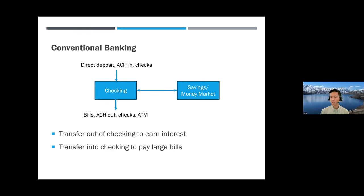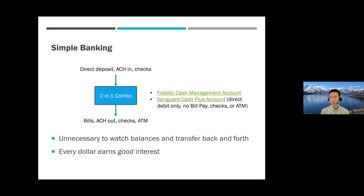After credit cards, our checking account is probably used the most. In conventional banking you have a checking account and a savings account. You watch balances — if you have too much in checking you feel guilty it's not earning interest, so you transfer to savings, then transfer back when a large bill is coming. Transfer in, transfer out, watching balances. What we do now: we merge the two into one combo account. All the money goes in and all the money comes out — just one account.